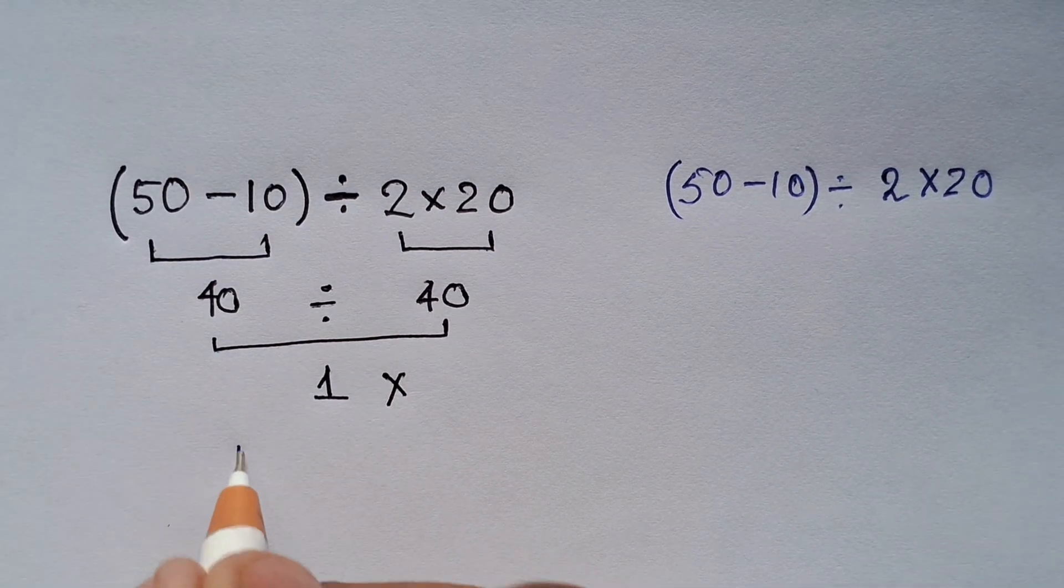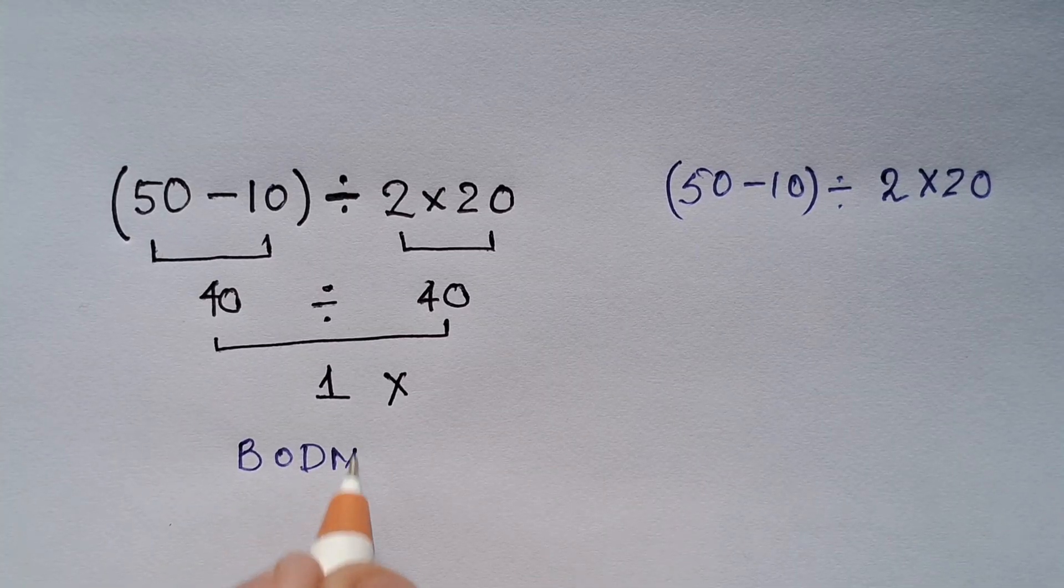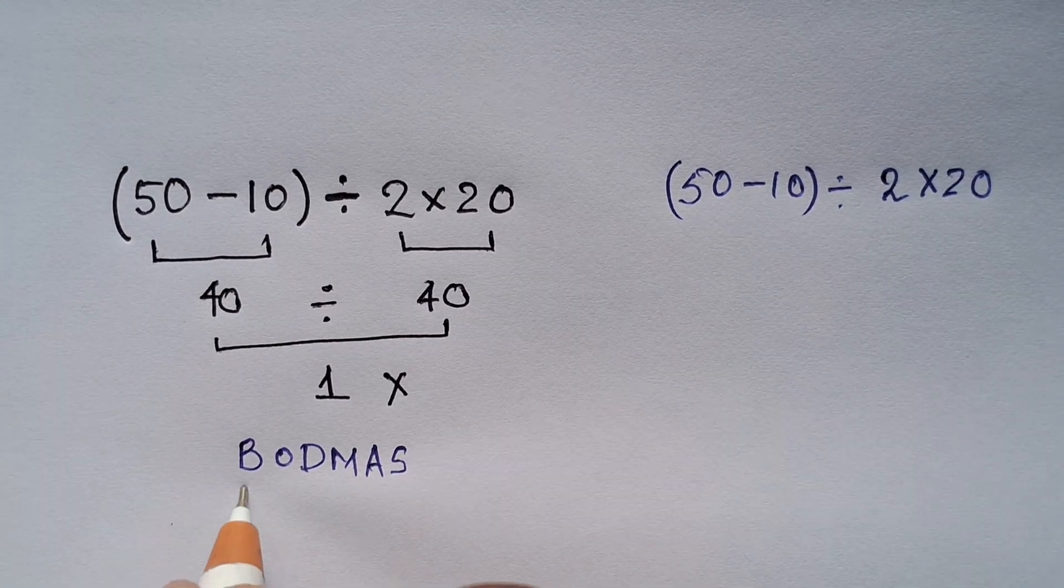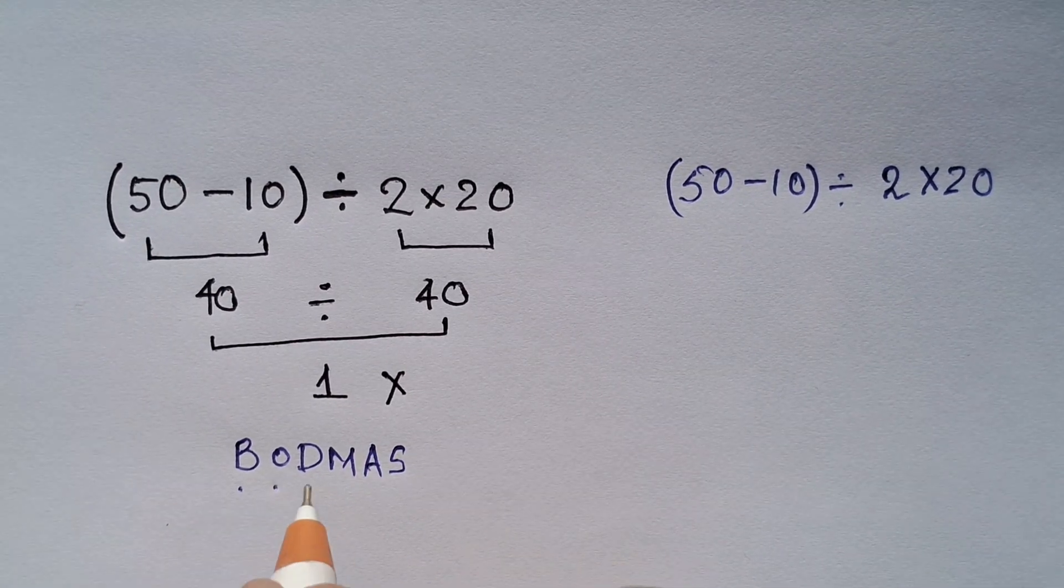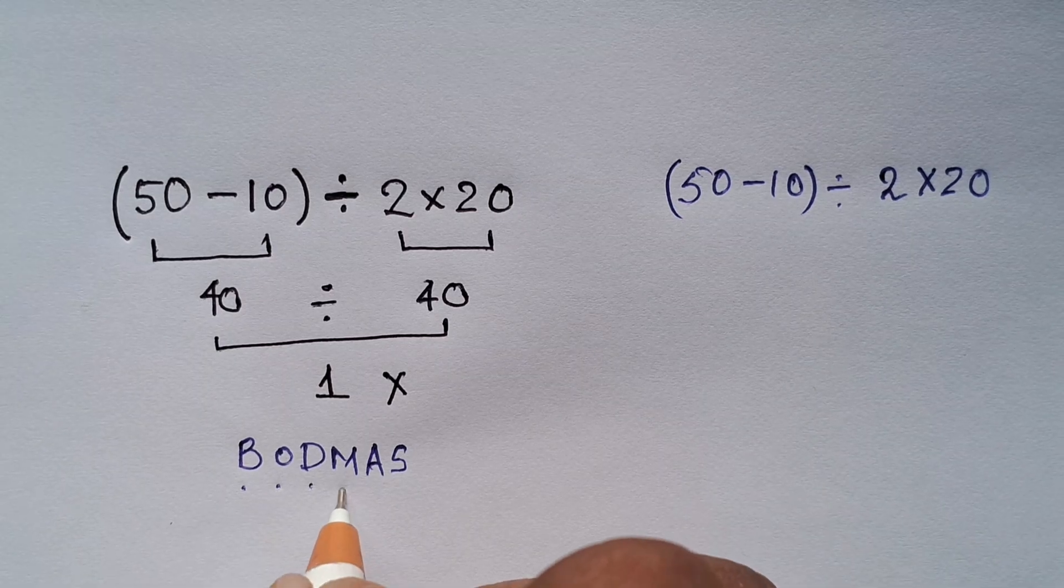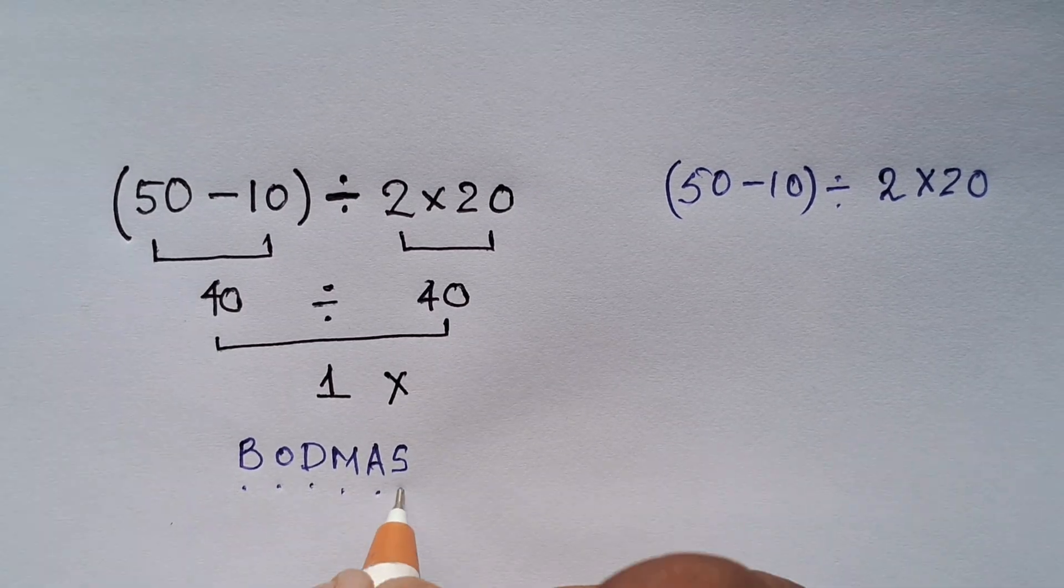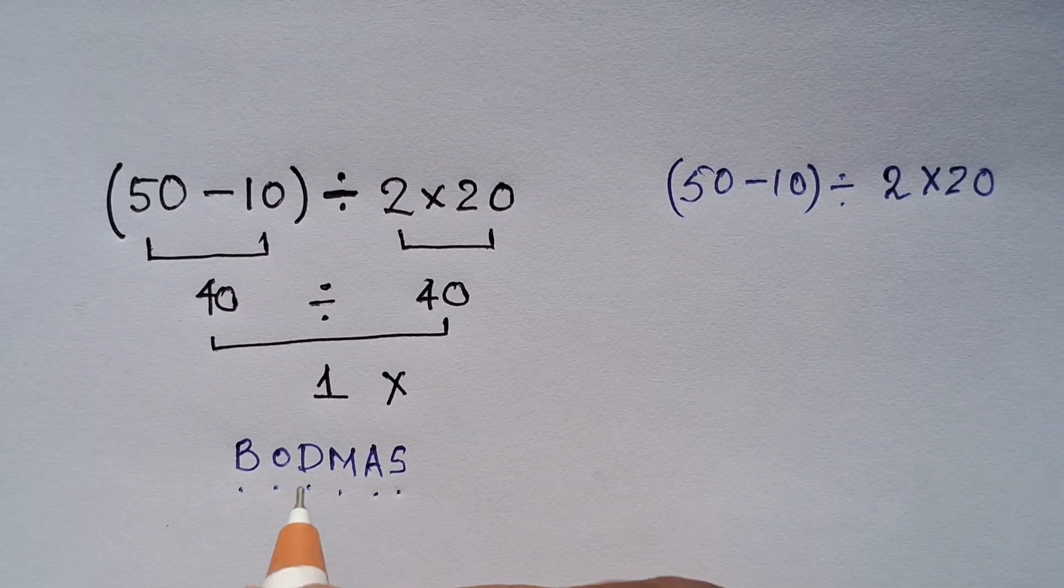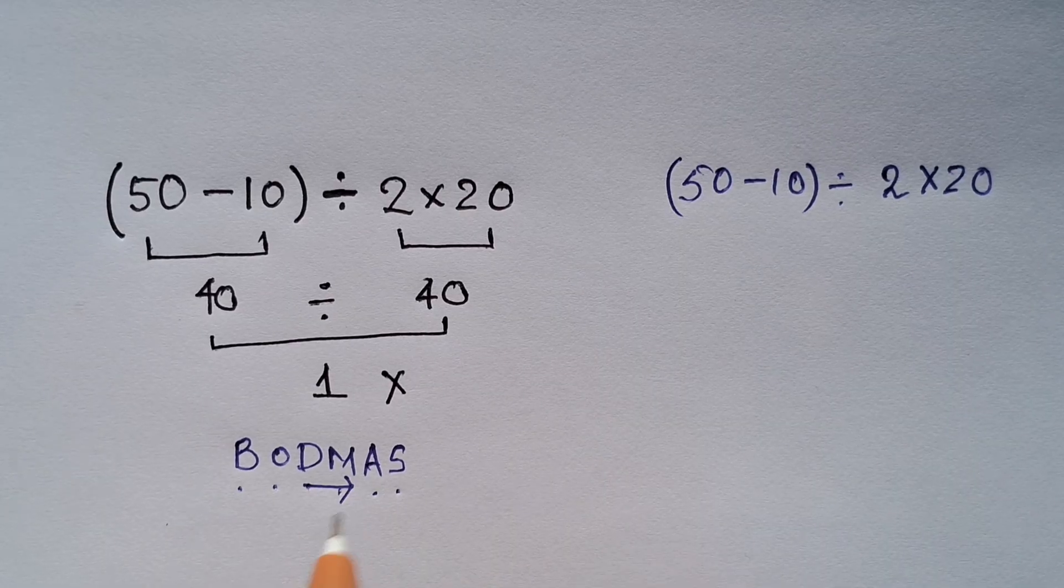The order of operations is called BODMAS, or sometimes PEMDAS, where B stands for brackets, O for orders, D for division, M for multiplication, A for addition, and S for subtraction. Division and multiplication have equal priority, so we have to solve them from left to right, similar to addition and subtraction.